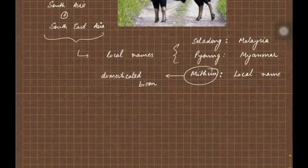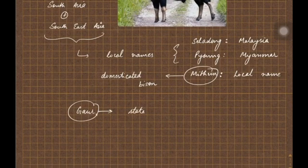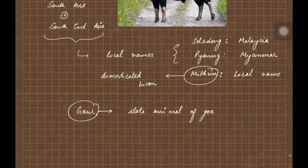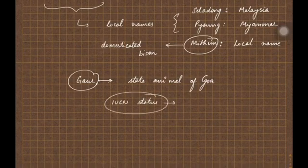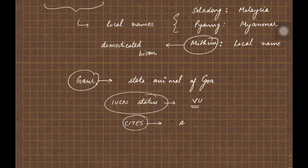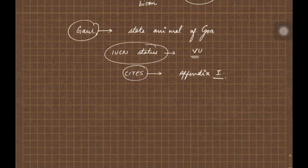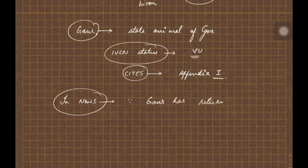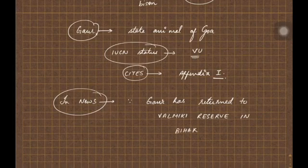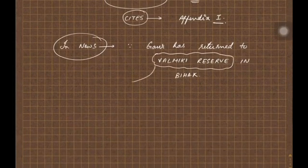Gaur is a state animal of the state of Goa. If you talk about the IUCN status of Gaur, it is vulnerable. According to CITES, it is located in Appendix 1. It was in news because Gaur has returned back to its earlier habitat, that is Valmiki Reserve in the state of Bihar.